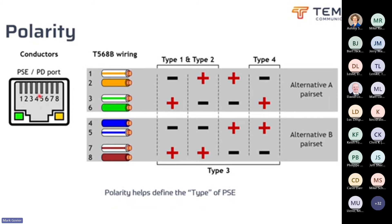Looking at what we would call the port — the RJ45 connector — we have the standard TIA-568B wiring and how it's configured in terms of what polarities might be presented on each one. Different polarities indicate the type of power sourcing equipment available to a powered device at the far end. Type one represents the three classes released as part of the original PoE standard 802.3af. Type two represents the expansion 802.3at. Types three and four were developed in 2015 and officially released in 2018 as 802.3bt.